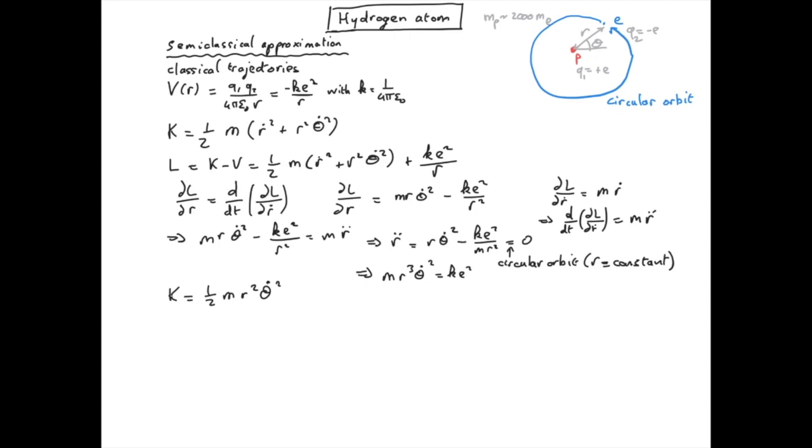Using the equation we just obtained this gives, which we see is half the absolute value of the potential energy. This is what we call the Virial theorem, which states that the kinetic energy of a particle in the potential in 1 over r and following a circular orbit is half the magnitude of the potential energy.